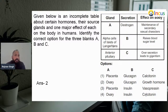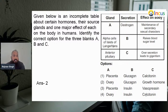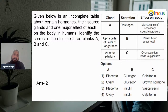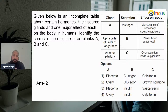Next question: a given table about certain hormones, their source glands, and one major effect in the human body. Identify the correct option for the three blanks A, B, and C. Blank A is a gland, with estrogen, and maintenance of secondary sexual characters — definitely connected with the ovary. So A will be ovary. Then, alpha cell of the islets of Langerhans: the secretion is obviously glucagon because beta cells secrete insulin and alpha cells secrete glucagon — glucagon raises blood sugar level. Anterior pituitary secretes hormone C; over-secretion leads to gigantism, so C is growth hormone.